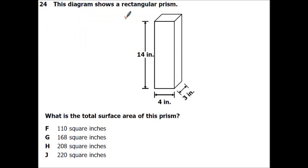This diagram shows a rectangular prism. What is the total surface area of this prism? So you should remember that surface area equals 2 times length width plus 2 times length height plus 2 times height width.